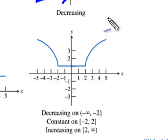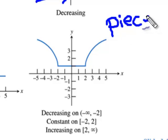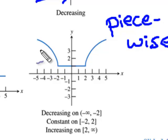And this here is what we call a piecewise function. Piecewise. Meaning we can break it into different pieces. So from negative infinity up to negative 2, it is decreasing. Then from negative 2 to 2, it's constant at that point. And then from negative 2 to positive infinity, it is increasing.